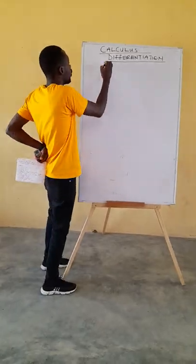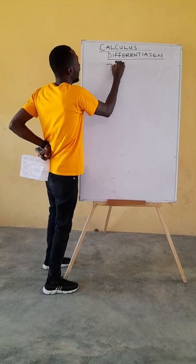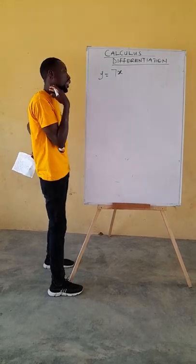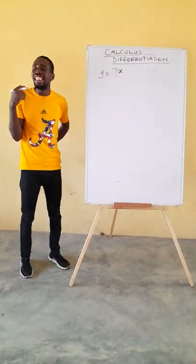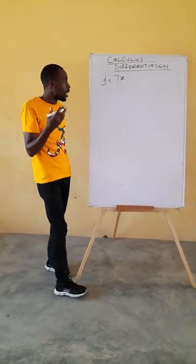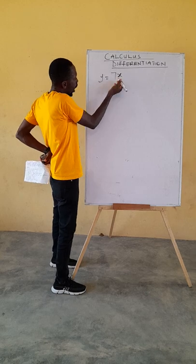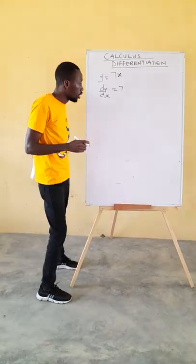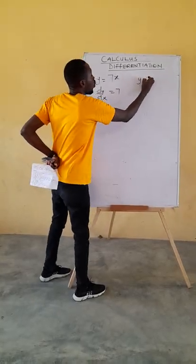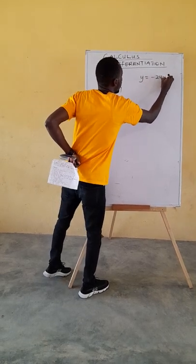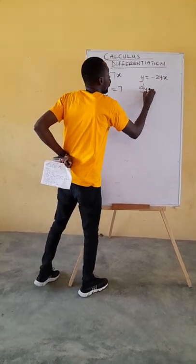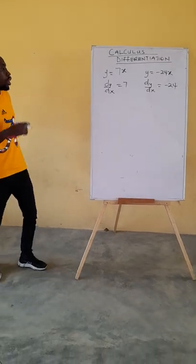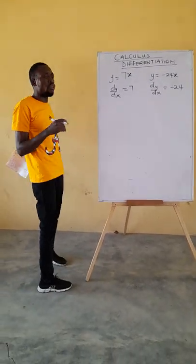About differentiating a linear term like this — people get confused how to differentiate this. It's simple. Anytime you differentiate a linear term, the answer is just the coefficient of the variable. So if y is equal to 7x, dy over dx is simply 7. If I have y equals to negative 24x, dy over dx is nothing but the coefficient, which is negative 24. So the differentiation of a linear term is the coefficient of the variable.